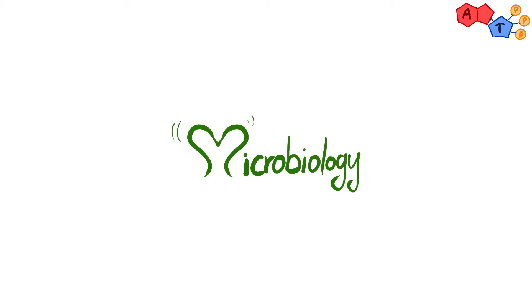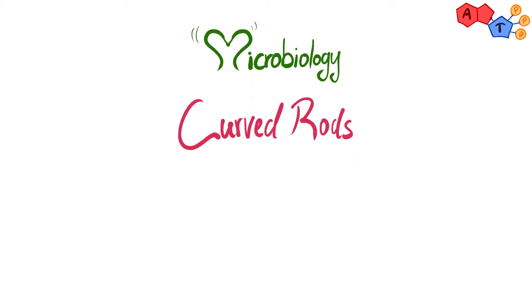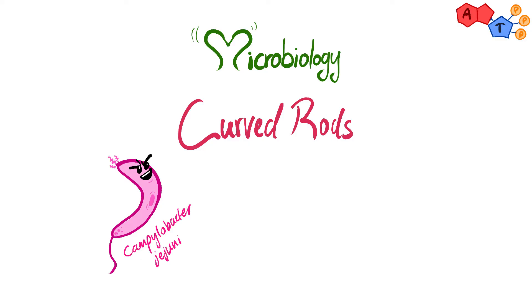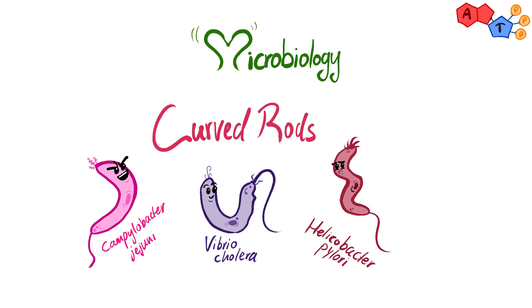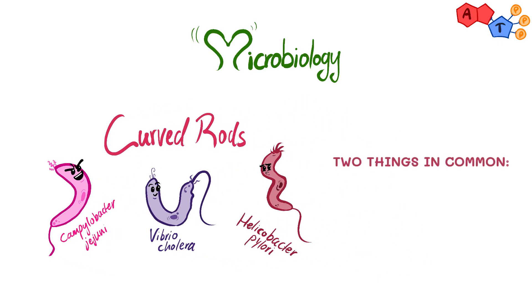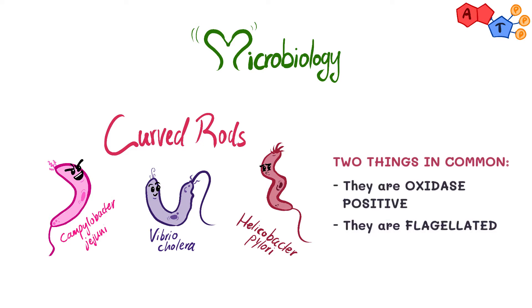Assalamu alaikum everyone, welcome to another ATP video. Today we'll continue our series on gram-negative bacteria and we will talk about three clinically important curved rods: Campylobacter jejuni, Vibrio cholerae, and Helicobacter pylori. During this video we will talk about the features of each organism, the clinical importance, and the treatment. All three organisms have two things in common in addition to being curved rods: they are oxidase positive and flagellated organisms.